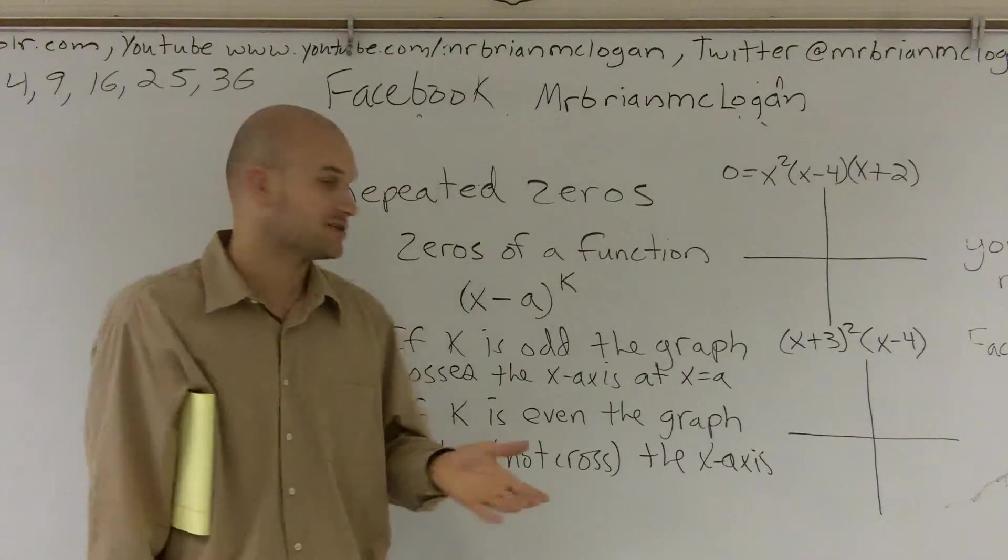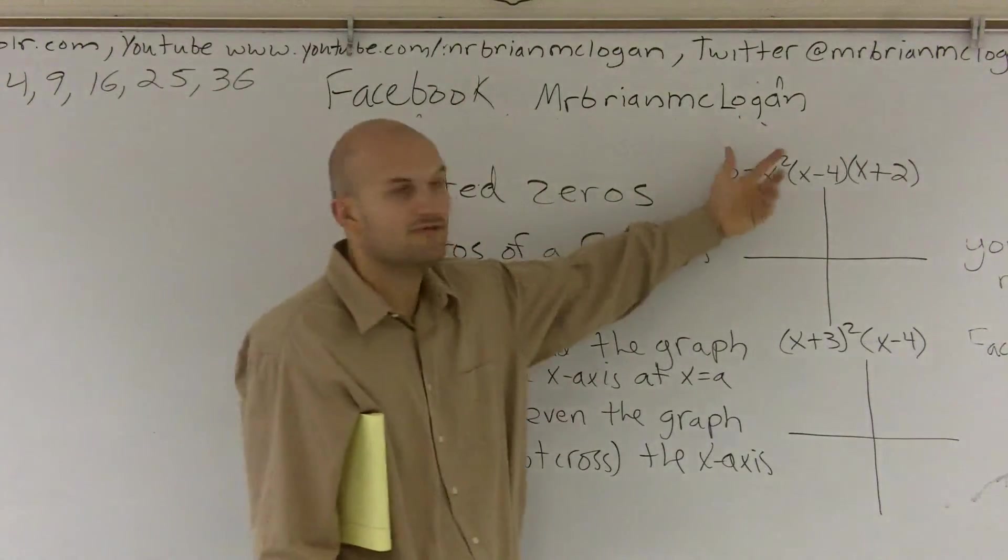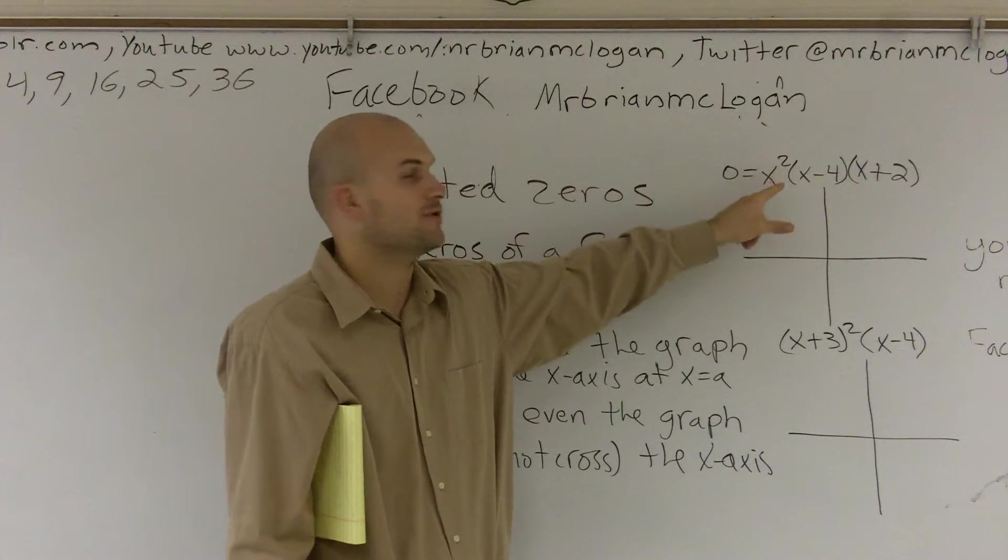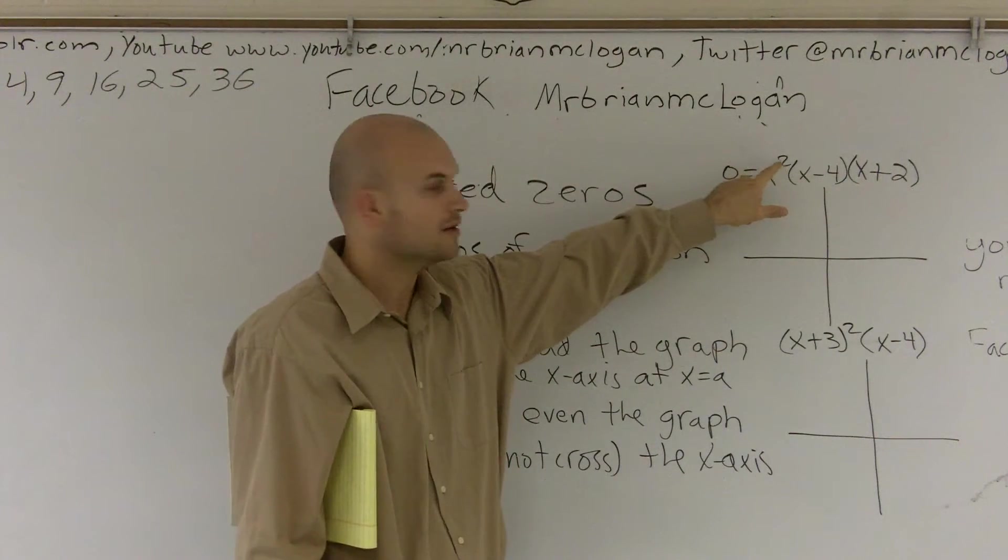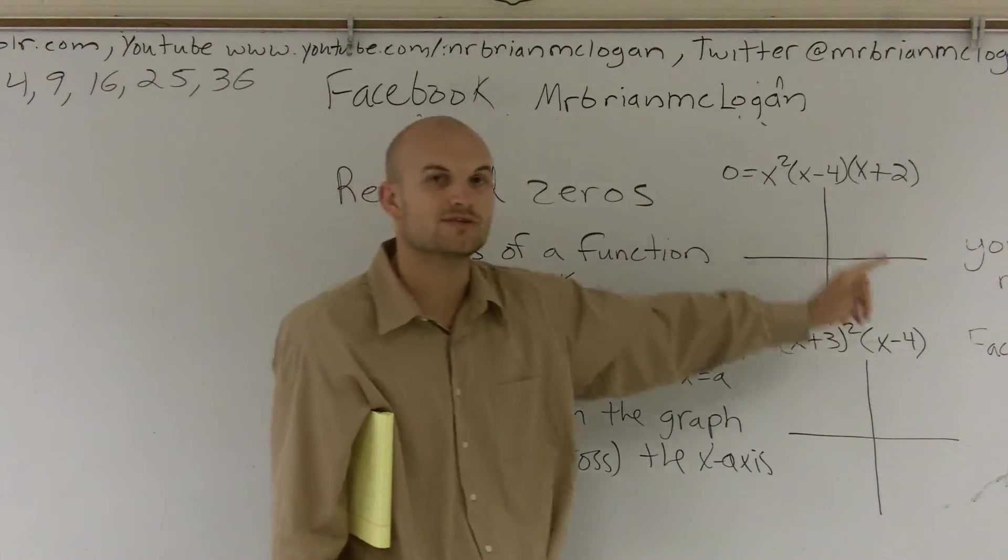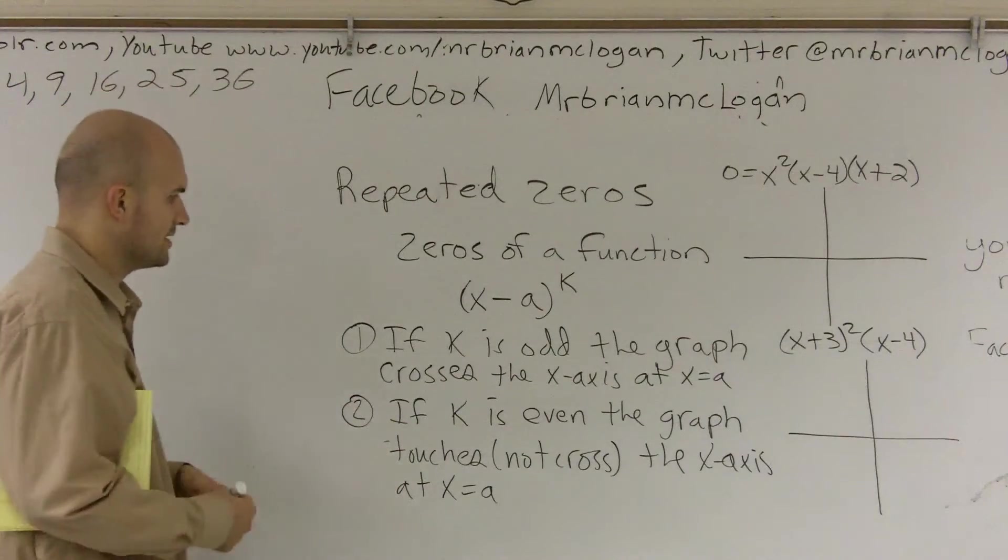Well, sometimes when you're finding your factors, you're going to get a factor that's going to be raised to a power. Like when you factor, let's say you had a factor of x squared. So you're going to be getting a zero that's to that x squared power. Or here, let's say you factor it and you get (x + 3) squared. So what does that mean? Well, there's a lot of really important parts to what that means.